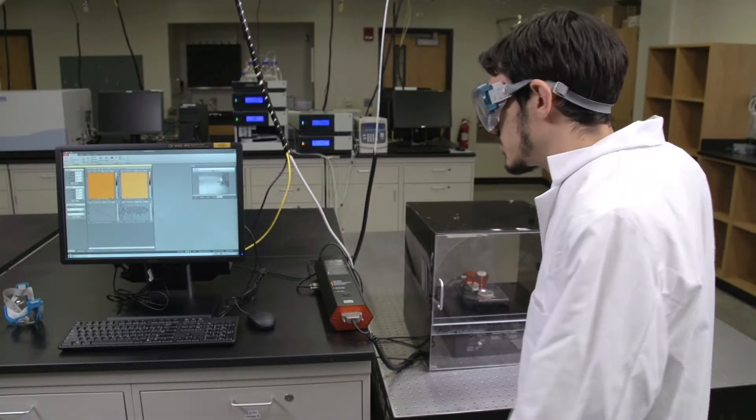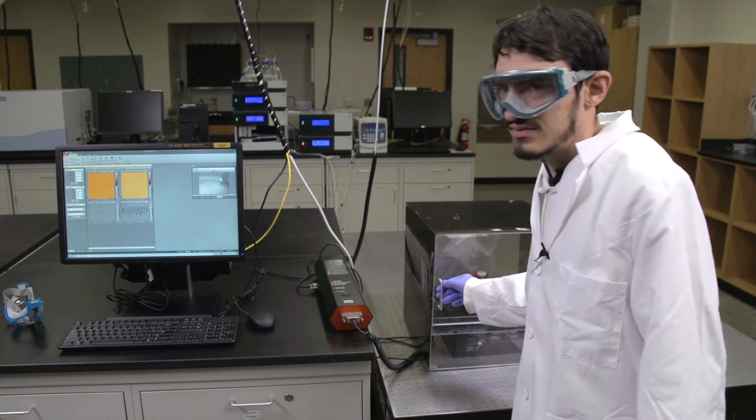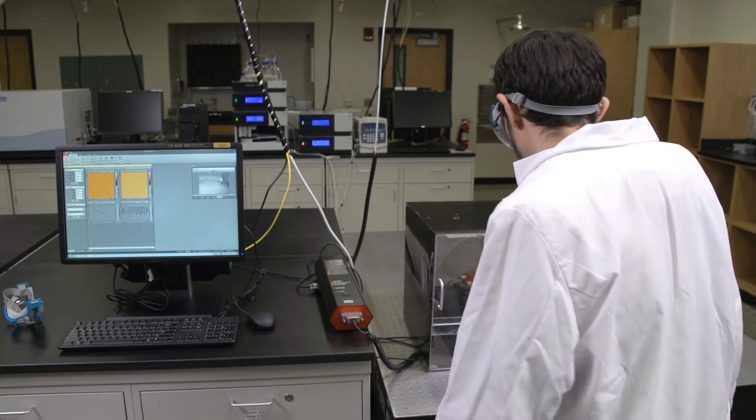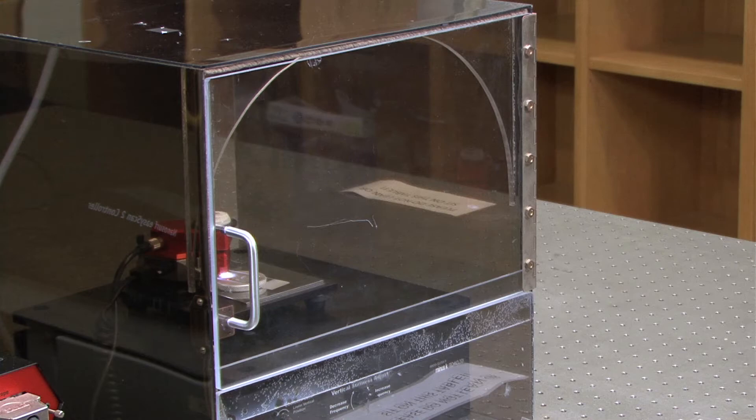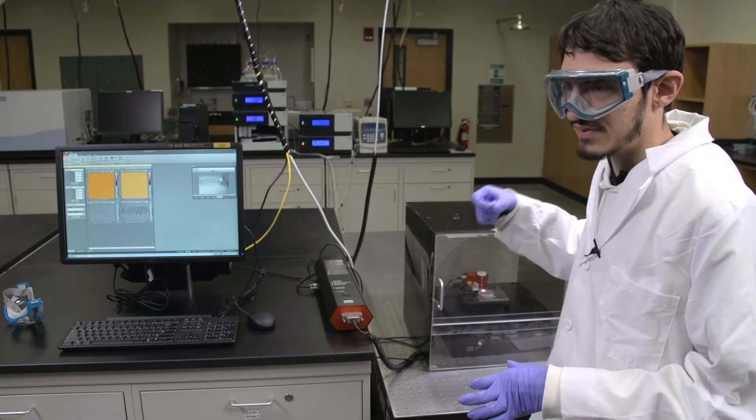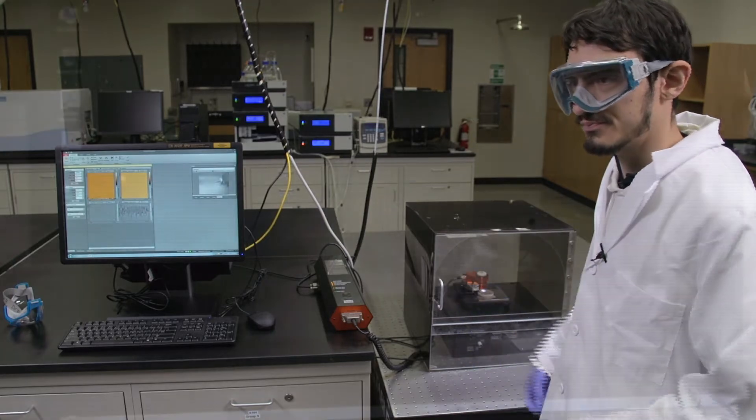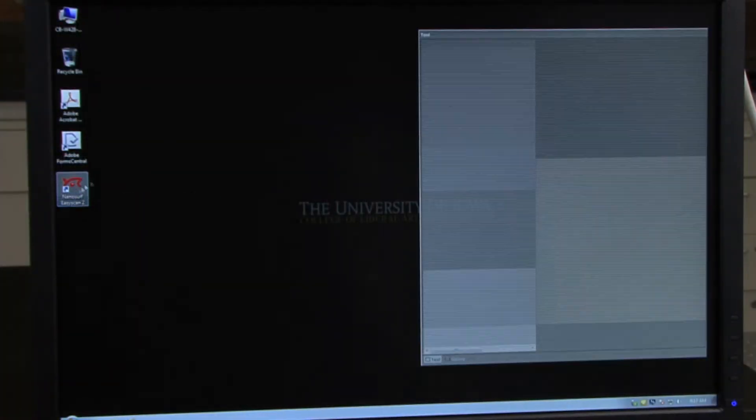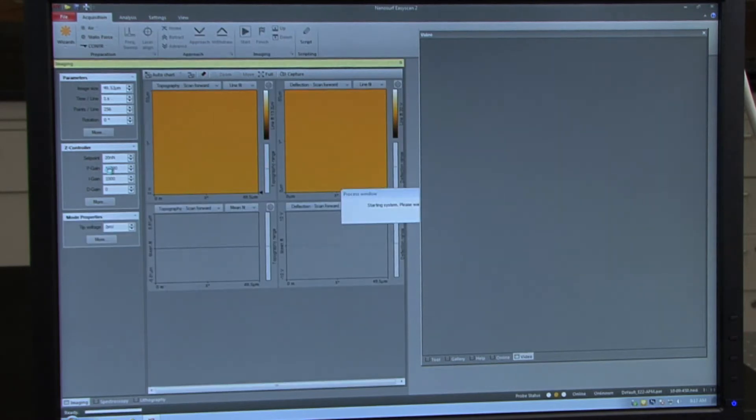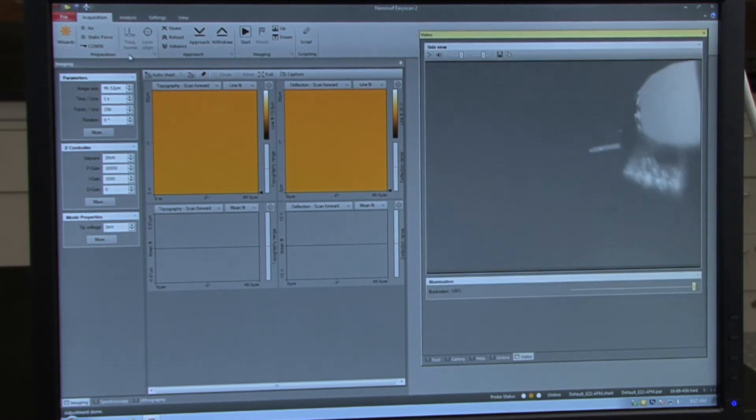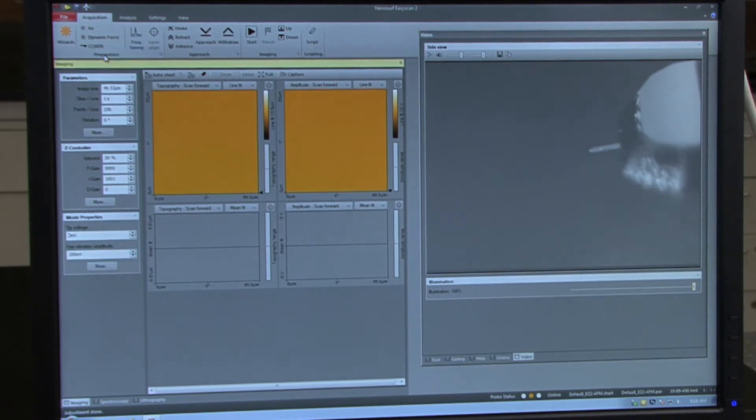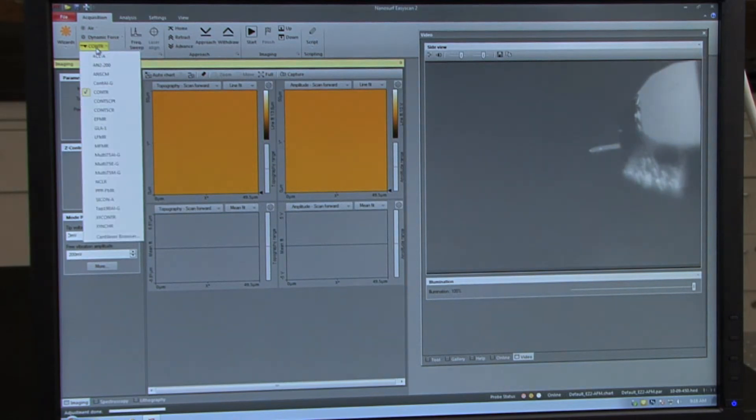Prior to operating the software, be sure that the door to the draft box is closed over the AFM instrument. And also be sure that the AFM is level by looking carefully over the head at the bubble within the black circle. Open the NanoSurf EasyScan 2 software after the power supply to the AFM has been turned on. Under the acquisition tab that comes up, change static force to dynamic force and change the tip type, which is under that, to ACL-A.